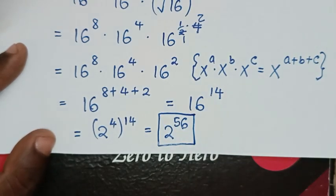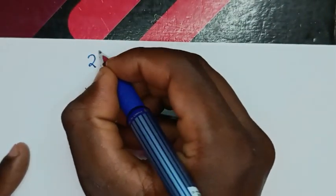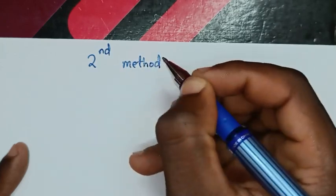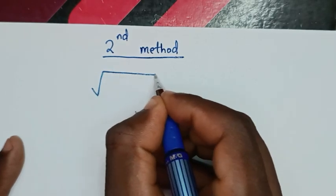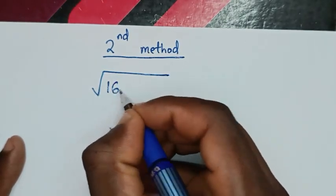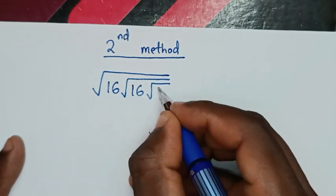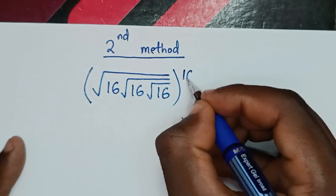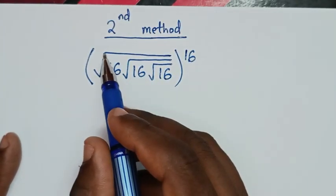Or, to solve using another method — let's call this the second method. From our problem, which is square root of 16, and a square root of 16, and a square root of 16, bracket, power of 16. Now, from square root is the same as power of a half.